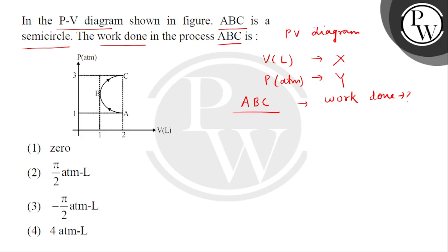As we know, ABC is a semicircle. If we check the diameter AC, the corresponding pressure we get is 2 atmospheres. That means 2 atmosphere is the diameter, so the radius is 1 atmosphere.